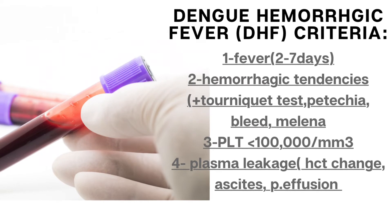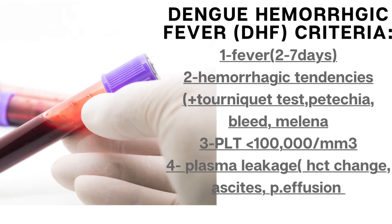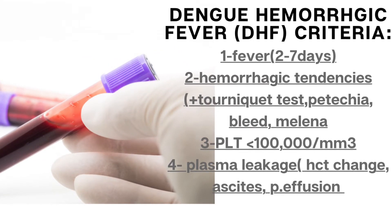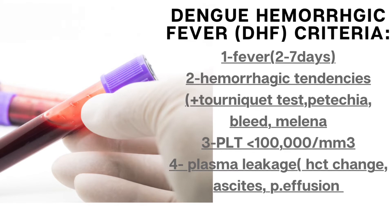The criteria for dengue hemorrhagic fever comprise a narrow definition that does not encompass all patients with clinically severe or complicated dengue infection. According to the guidelines, a dengue hemorrhagic fever diagnosis requires all of the following: fever or history of acute fever lasting 2–7 days, occasionally biphasic, and hemorrhagic tendencies evidenced by at least one of the following.